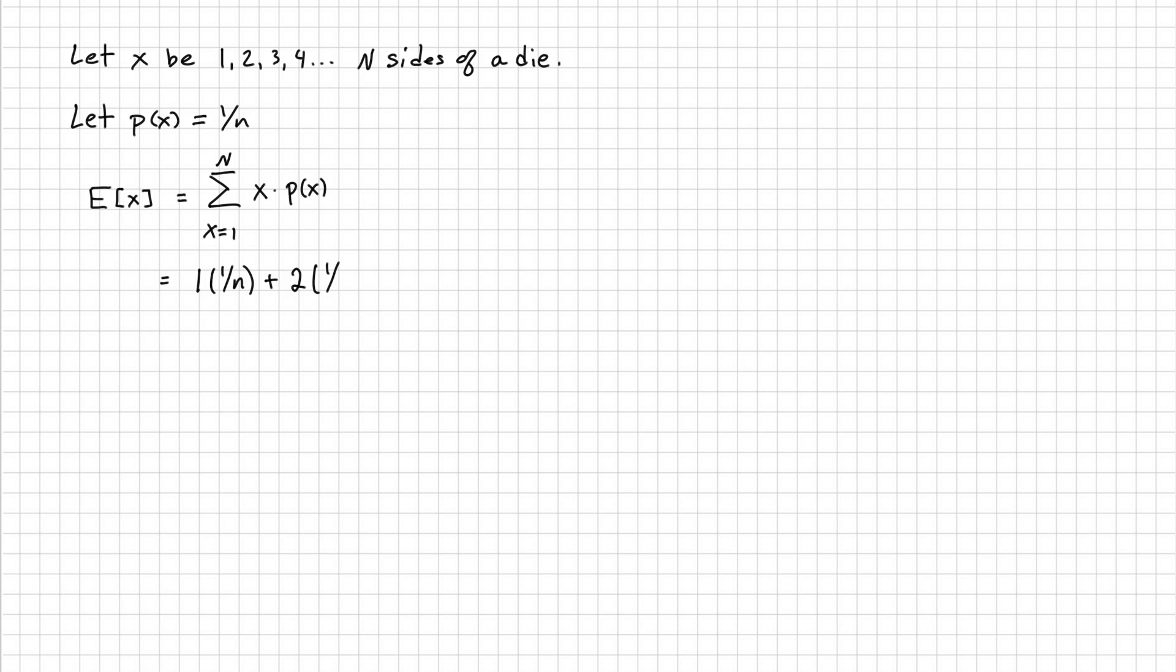We're going to expand this, see if we can find a pattern. First side, n-th probability, second side, n-th probability, n-th side with its 1 over n probability. Let's factor 1 over n. And now we have this series, 1 plus 2 plus 3 and so forth.